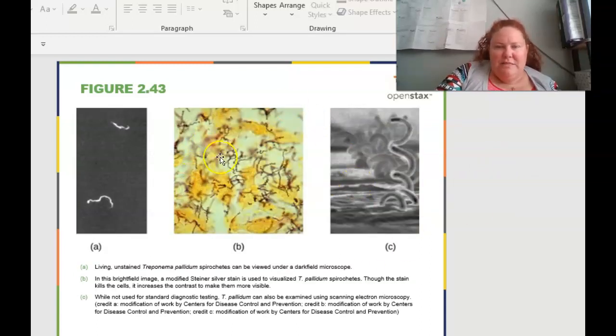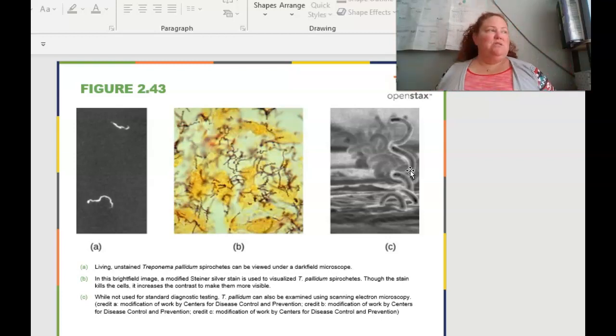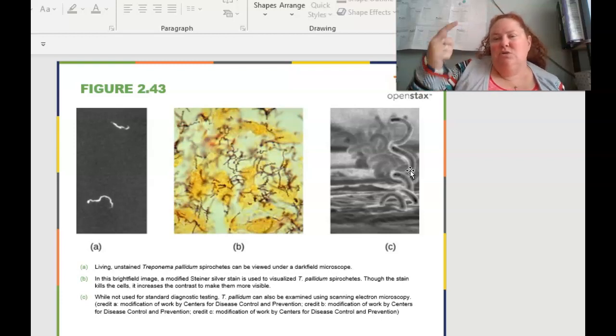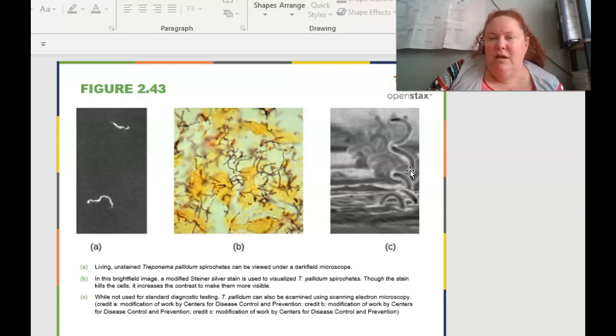So here's a couple other different examples of staining. This is a living unstained spirochete that can be used under dark field. In this bright field image, modified silver stain is used to visualize the spirochetes. Even though the stain kills the cells, it increases the contrast to make them more visible. Where down here, we are going to be using scanning electron microscopy just to see more details. So SEM is not used diagnostically because it takes too long, and B, it's very expensive. But if you want to do some scientific studies, you can look more for the morphology than you would want to do TEM or SEM.